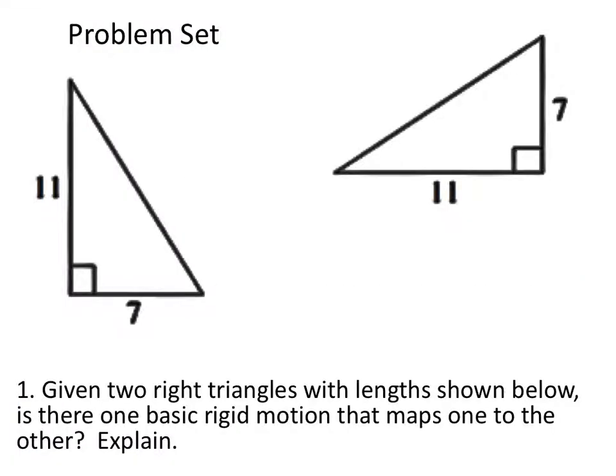All right, so we have this problem set. Given these two triangles with lengths shown below, is there one basic rigid motion that maps one to the other? Yes. This one, we can see if we took this length right here and rotated it, we would get this one, but also with this red line as well. And then the angles would correspond with each other as well.